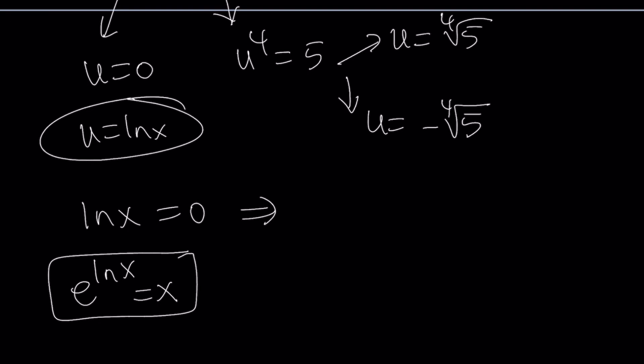And we can do e to the power both sides. So that's going to give us e to the power ln x equals e to the power 0. E to the power ln x equals x. So this is going to be x equals 1.